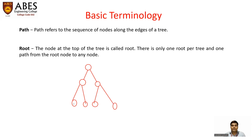If we are talking about a particular node, that node is reached by a combination of two edges from the root node. The root node is a special node of the tree and it is a single node — there is only one root per tree. The path length of that node is two, meaning we traverse two edges to reach it.